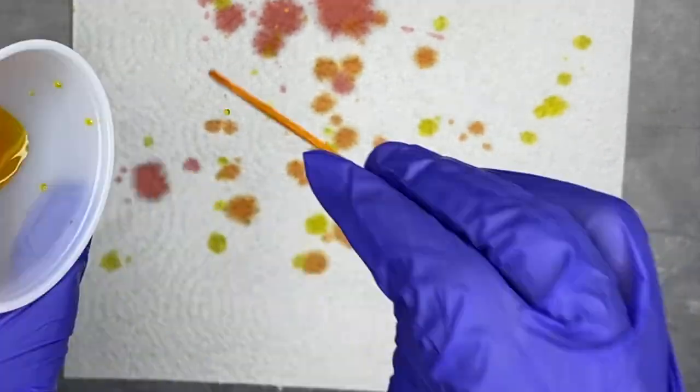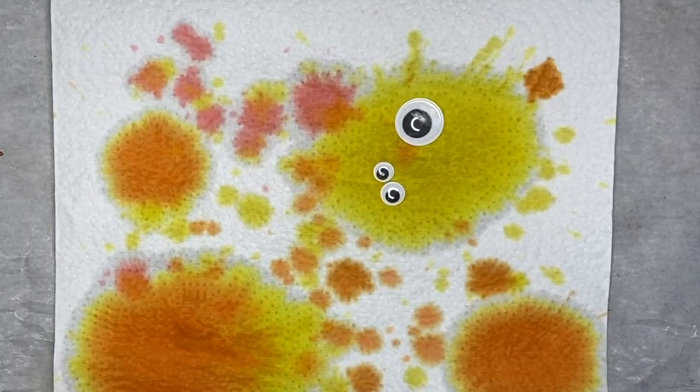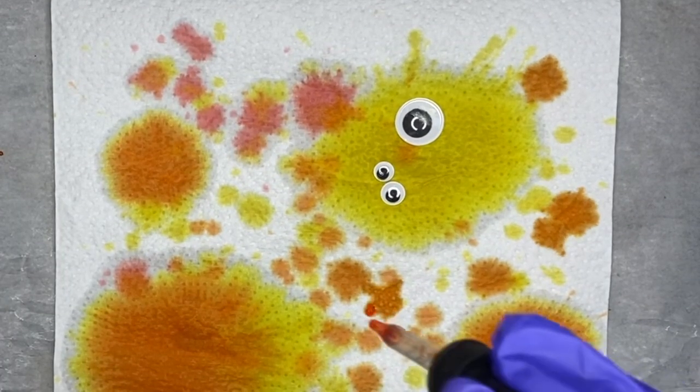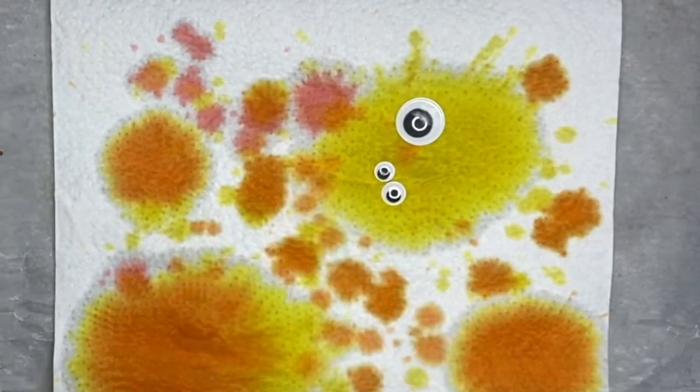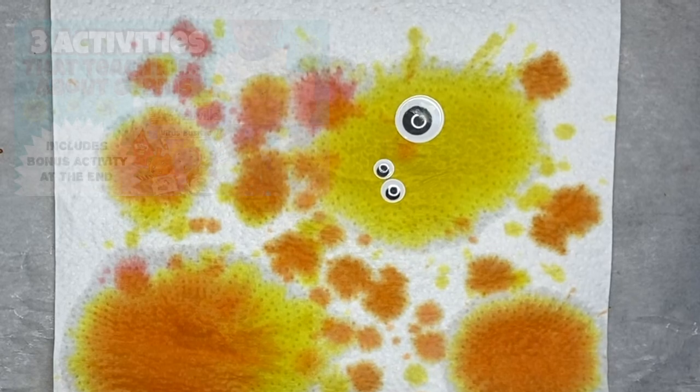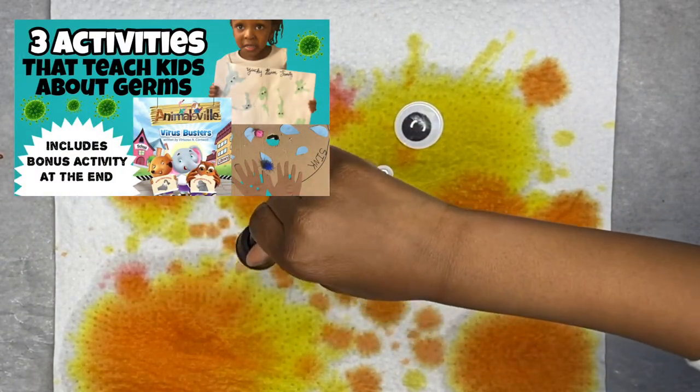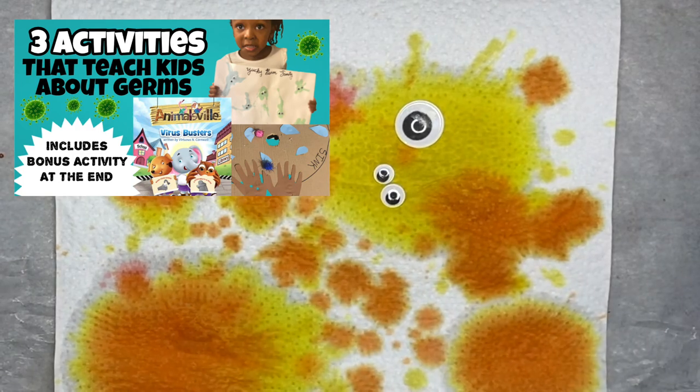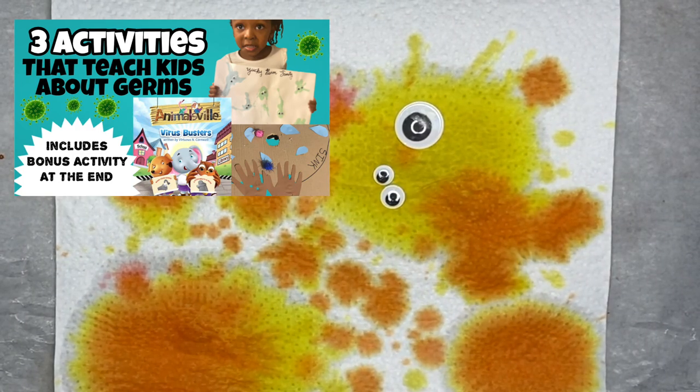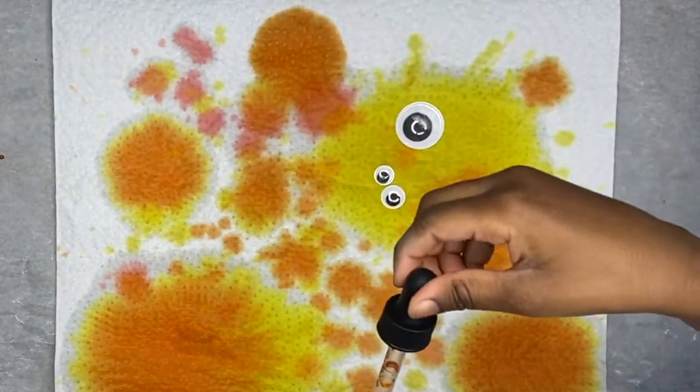And the last method I'm going to show you guys is kind of like a droplet method. You can take a popsicle stick and take the same solution and just drop it like this. Or you can use a dropper. I got mine from a medicine cabinet and there's my daughter putting googly eyes on this because she swears it looks like a monster, which it does. Remind you of that craft we did from Virtuous's first book, the virus busters. Remember that one? Well, if you don't, click this card up top.